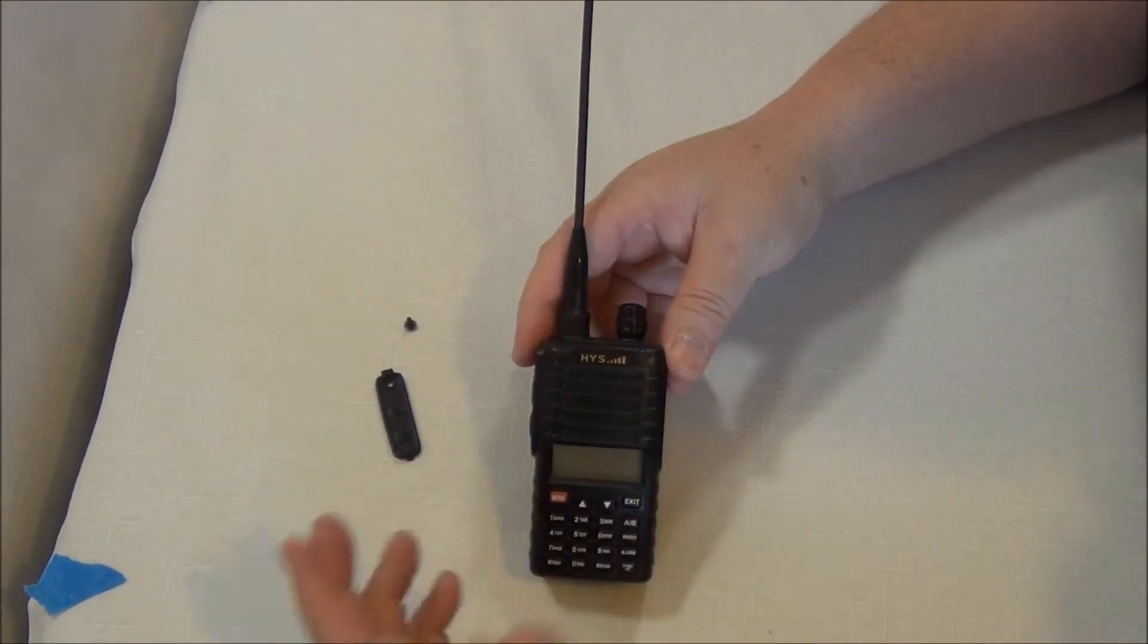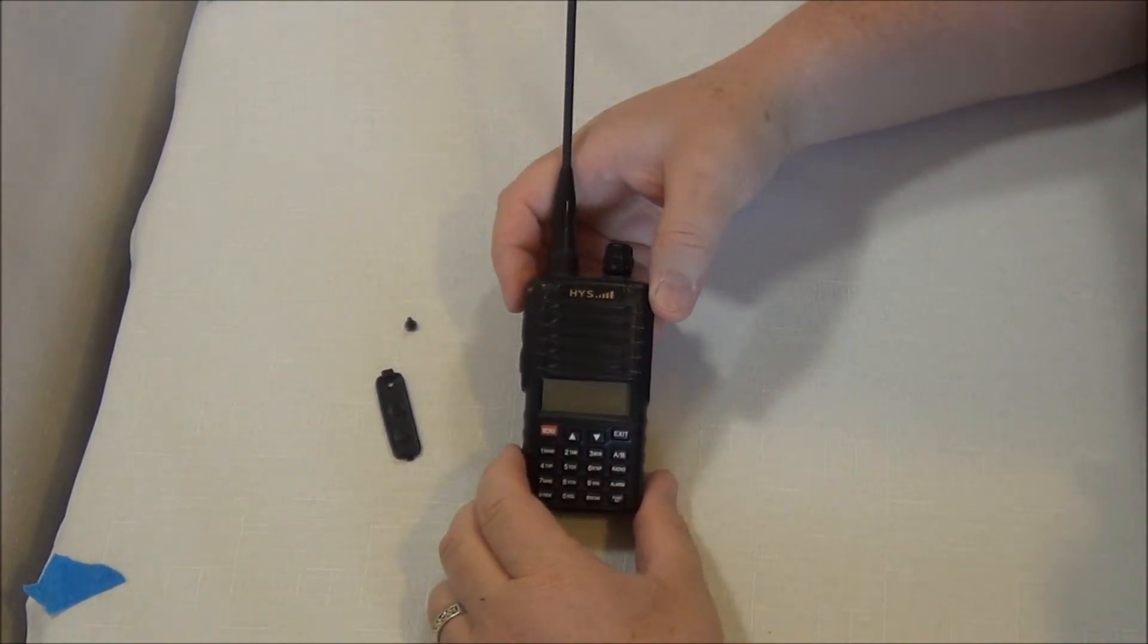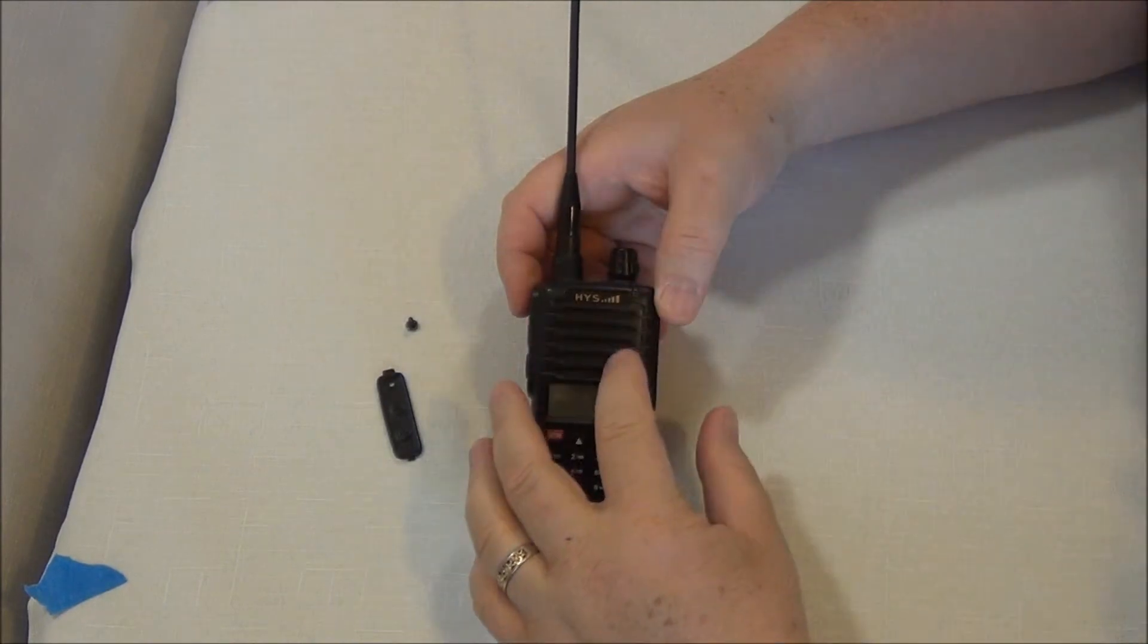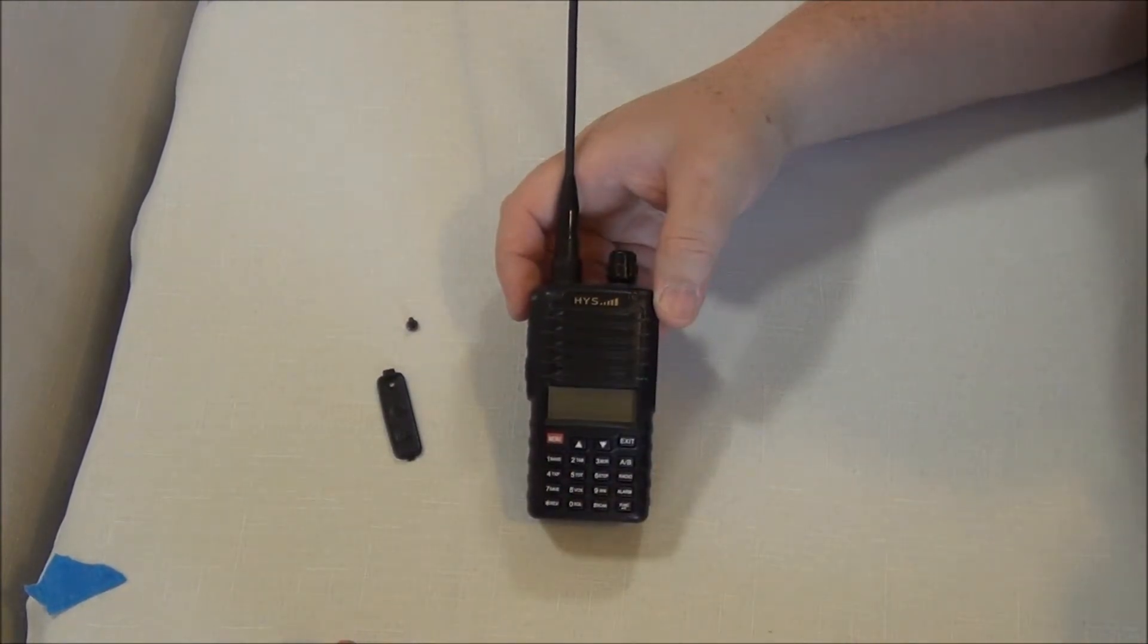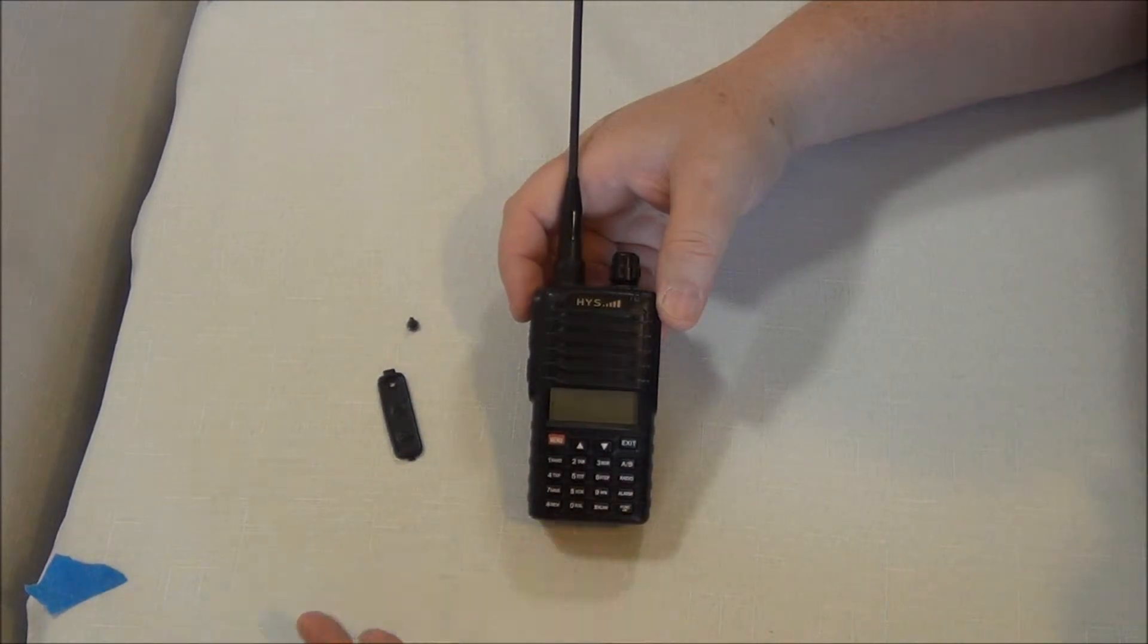Now the radio can be used for other functions besides ham. Say for example you want to program this for FRS and GMRS stations because you can control the wattage. You could put it down to one watt and program it for some of the other bands.